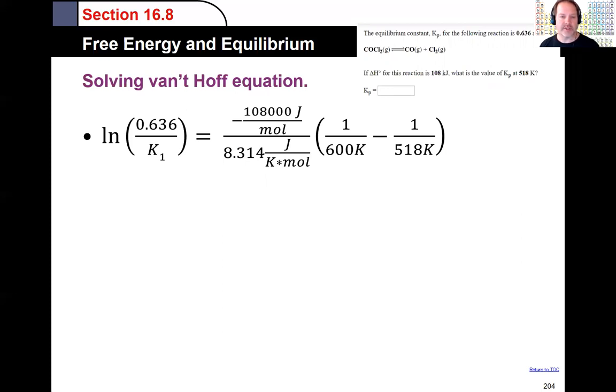My joules per mole will cancel out now. You'd say, well, they didn't give me joules per mole in the enthalpy, but that's understood to be the same thing there. So those will cancel out. And eventually my temperatures will cancel out as well. And on the right hand side, it turns out to be 3.427.